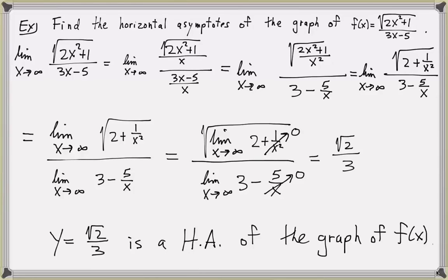Let's go back and change this limit to the limit as x approaches negative infinity. As x approaches negative infinity, we again want to divide the numerator and denominator by x. But in order to get this x underneath the radical, I need to realize that negative x will equal the square root of x squared. So in the next step, when I put the x squared underneath the radical, I need to introduce a negative sign, because x is approaching negative infinity. This negative sign will carry through the rest of the problem, giving the limit as x approaches negative infinity of the negative of square root of 2 plus 1 over x squared, divided by 3 minus 5 over x.